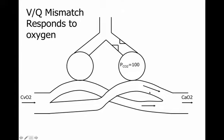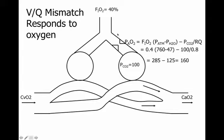VQ mismatch responds to oxygen. If I put the person on a 40% face mask, FiO2 changes from 0.21 to 0.4. PCO2 stays the same, so PAO2 becomes 160. Mixed venous still comes back at 10, but now both sides are oxygenated and PaO2 normalizes. There it is.